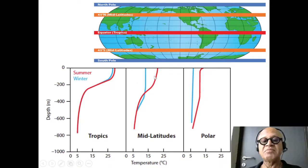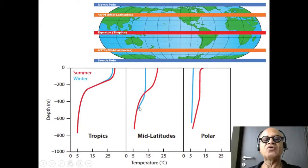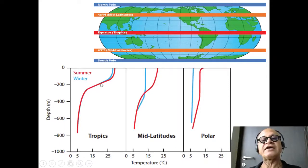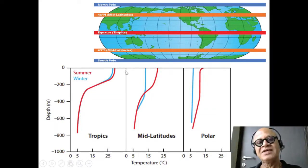In the mid-latitudes, there is fairly strong seasonality because in the fall and winter months, cooling happens at the surface, the thermocline is eroded, and stratification almost disappears. As the spring and summer months come along, the surface re-stratifies and you get a fairly strong thermocline, although not as strong as in the tropics.